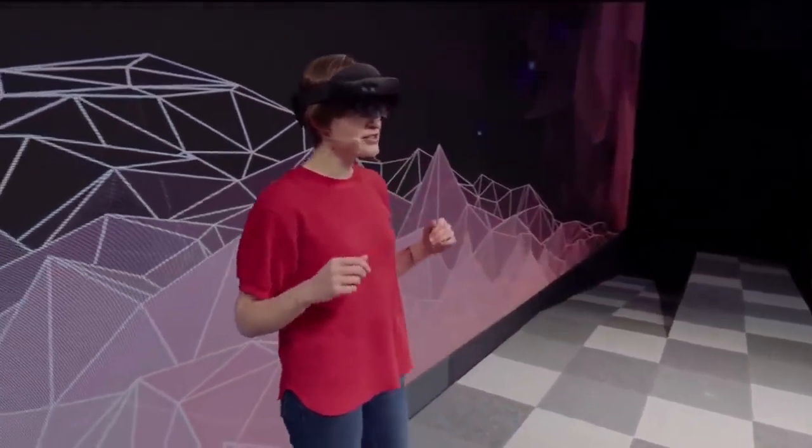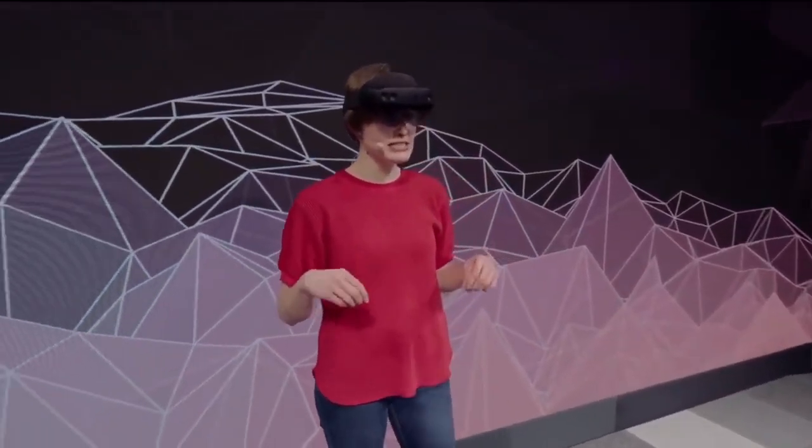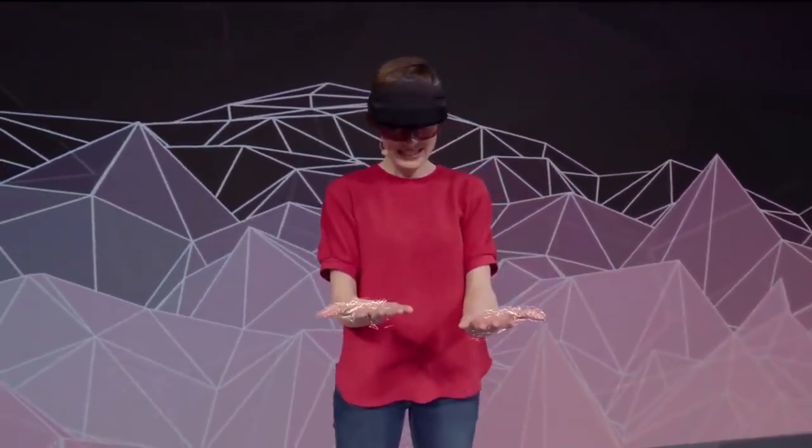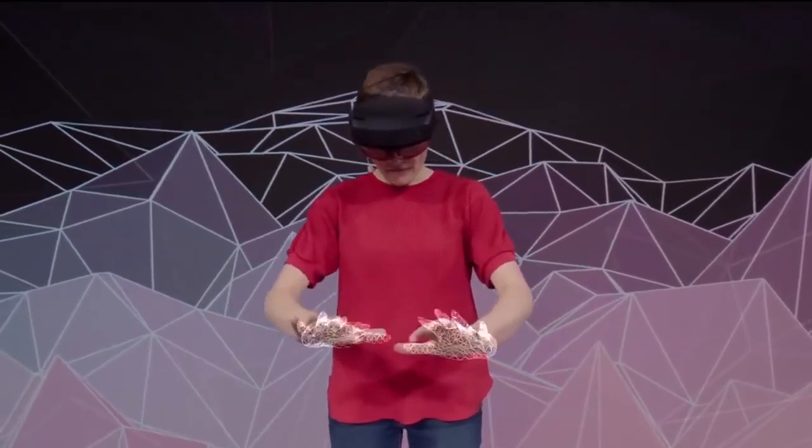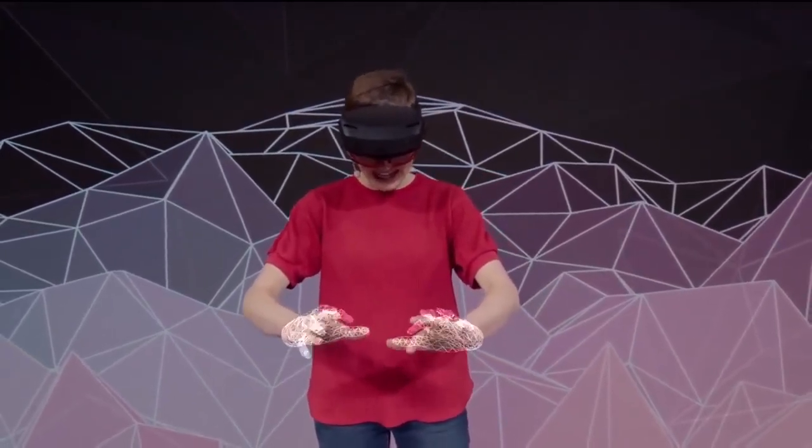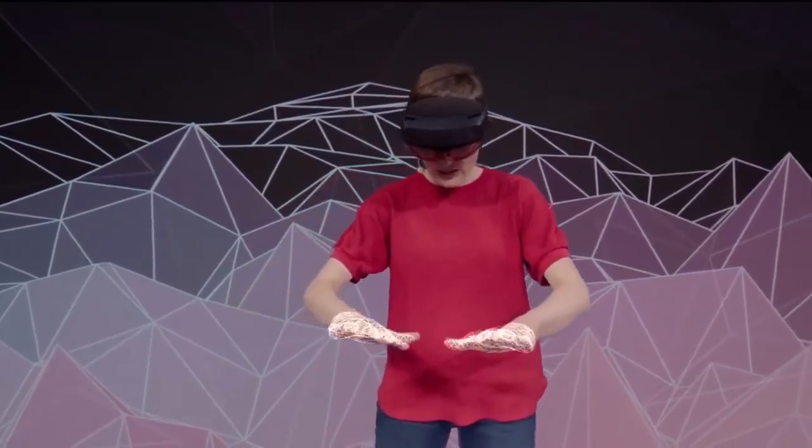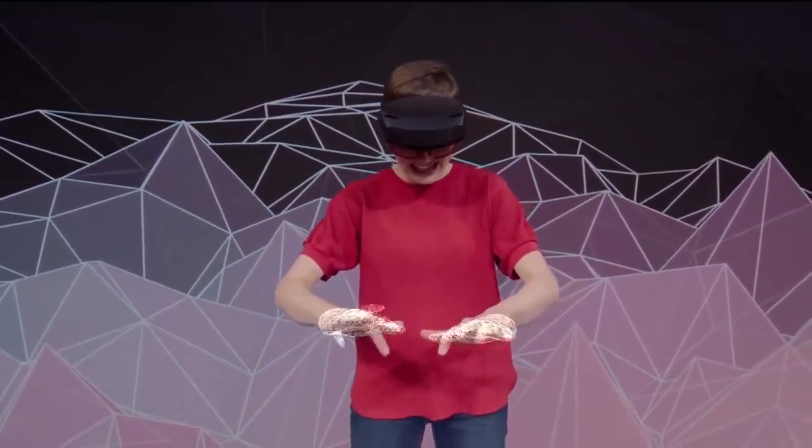Now, not only does the HoloLens 2 recognize me, it also recognizes my hands. Look at this. Fully articulated hand tracking. And as I move my hands around, the HoloLens 2 is actually calibrating to my unique hand size.